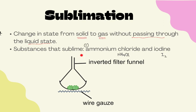This shows the setup of sublimation, whereby the substances or mixtures are placed in an evaporating dish covered with an inverted filter funnel. When heat is applied, the substance — like ammonium chloride — will sublime and be collected on the surface of the inverted funnel.